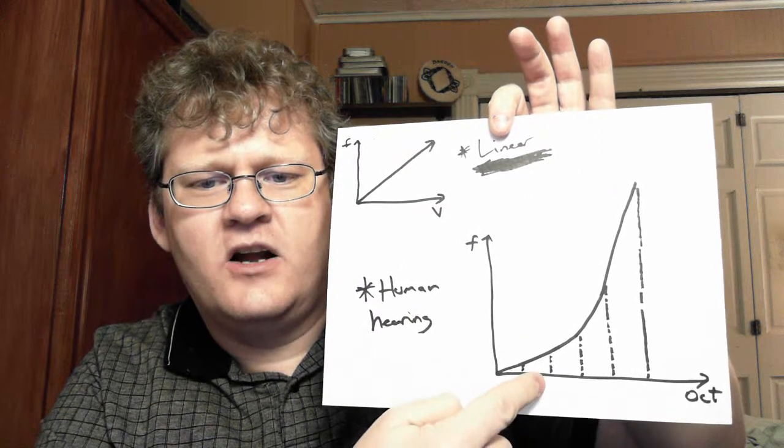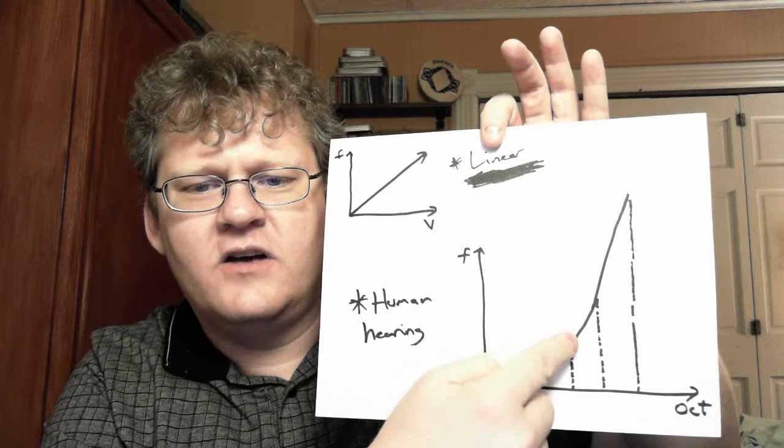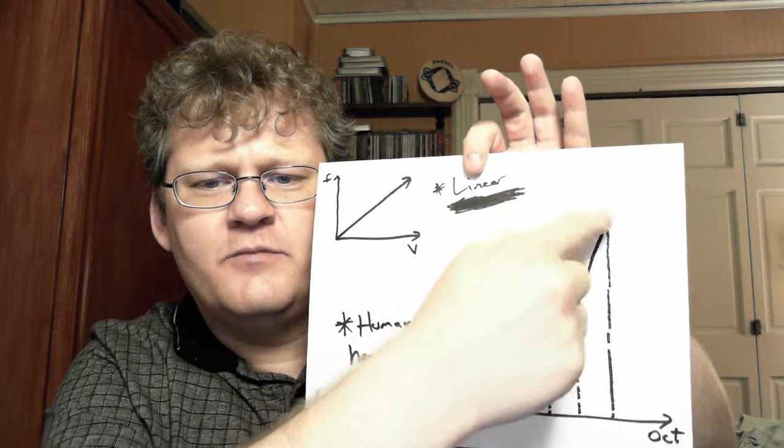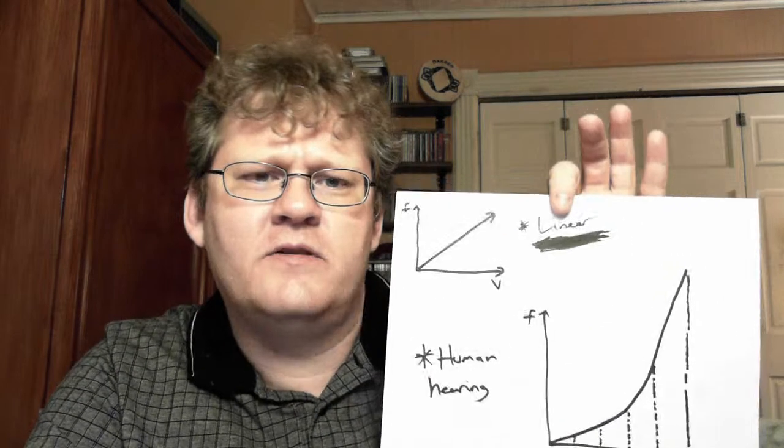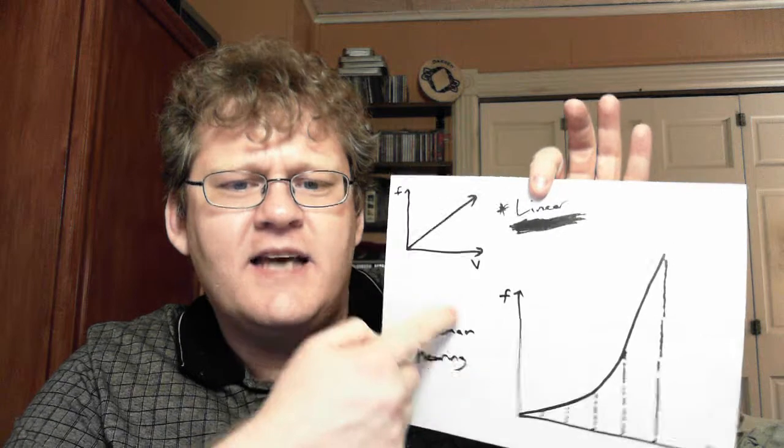So, here's an octave, and this octave is twice the frequency of this octave, and the next octave over is twice the frequency, twice the frequency of the previous, twice the frequency of the previous. It's a logarithmic, well, it's an exponential response that we need. That's how humans hear.